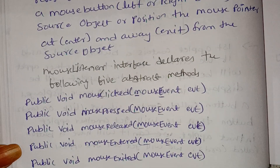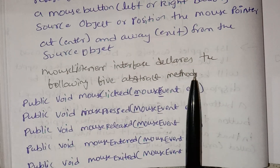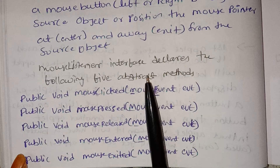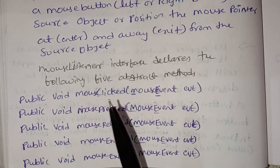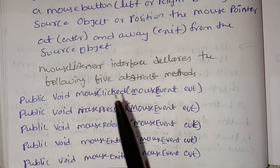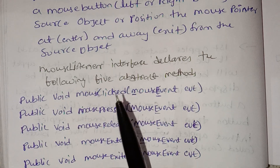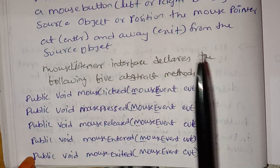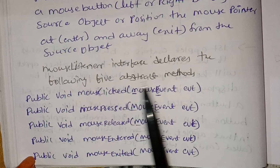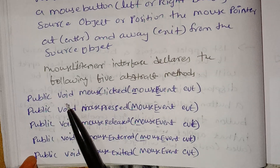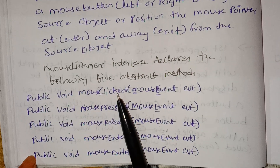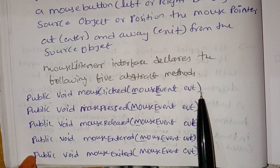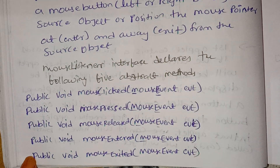MouseListener interface declares five abstract methods. For example: public void mouseClicked(MouseEvent evt).